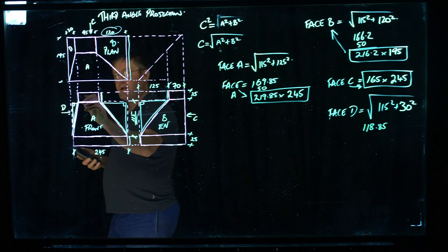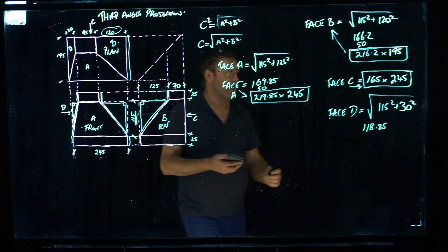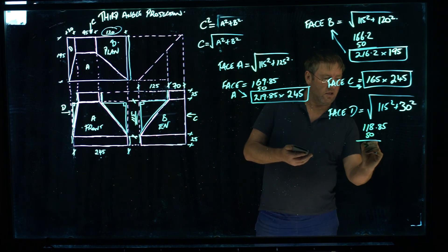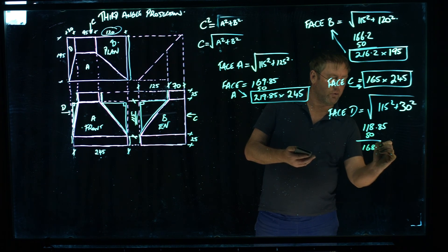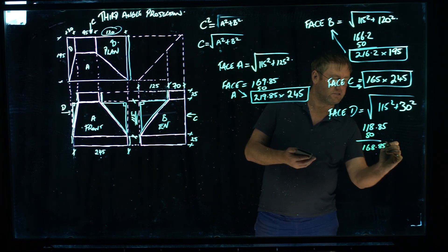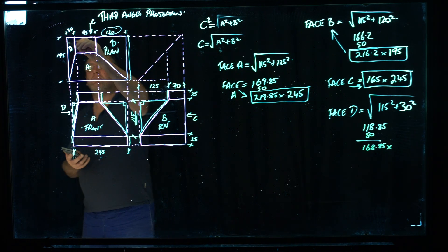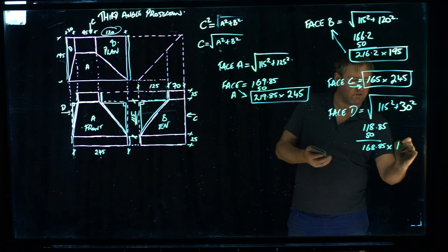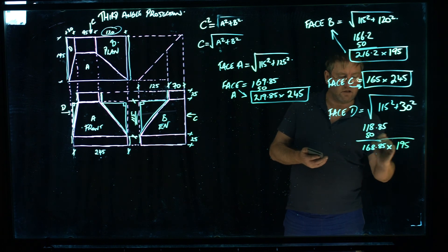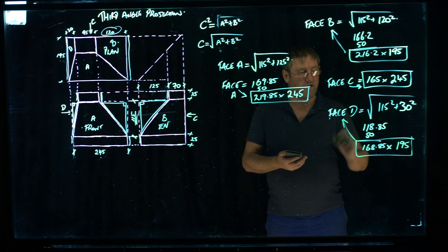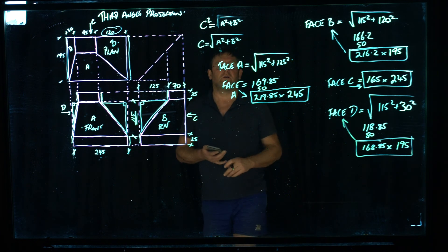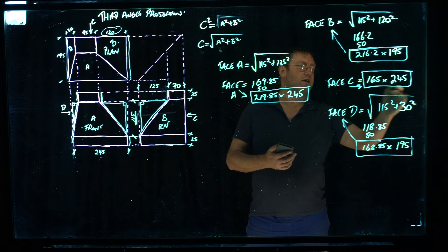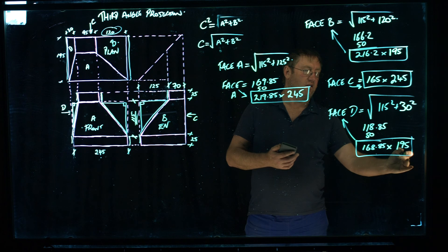Remember that we have to add our straight. 25 there and 25 there. So we add 50mm to that. And we get 168.85mm. And face D in plan view is 195mm wide. So that is the face size for face D. So you're going to step over to the guillotine. You're going to go and cut A at that size, B at that size, C at that size, and D at that size.